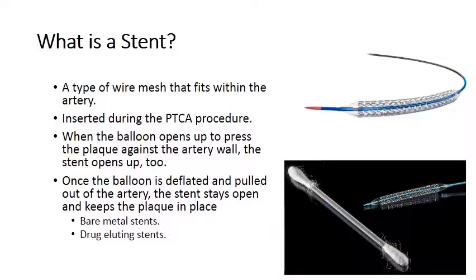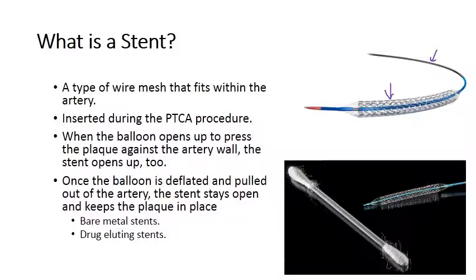It's inserted during the PTCA procedure — percutaneous transluminal coronary angioplasty — which I'll explain momentarily. The stent is mounted onto a plastic balloon, and there is a guide wire which guides the whole structure through the artery up to the place where the occlusion has happened. The balloon is then inflated and the stent takes its shape against the blood vessel wall. The balloon can then be deflated and pulled back out, and the stent stays open and keeps the plaque in place.